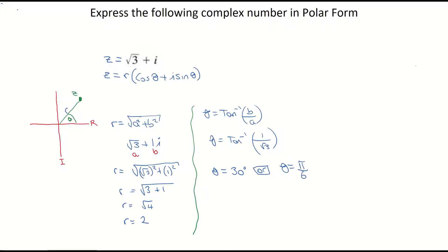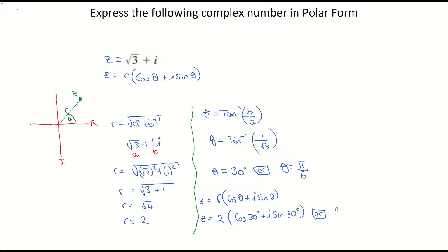Just be careful which way the question is asking you to express it. To express the complex number in polar form — R times cos θ plus i sin θ — it's 2 times cos 30 degrees plus i sin 30 degrees. In radians, it would be 2 times cos(π/6) plus i sin(π/6). And that's example 1.